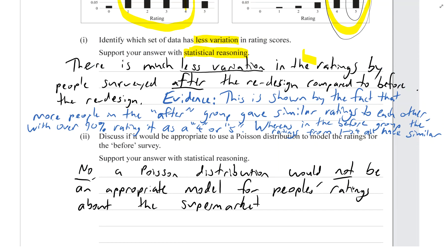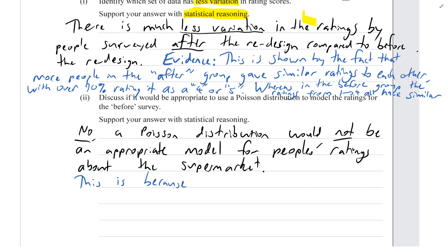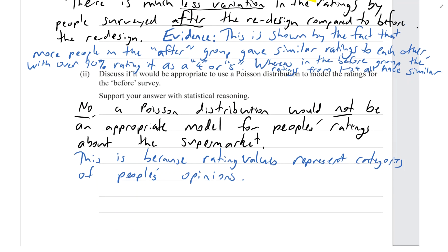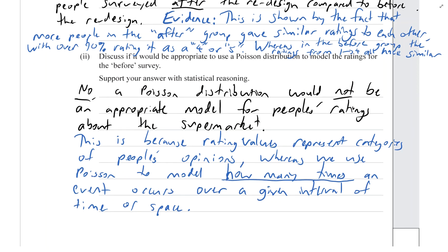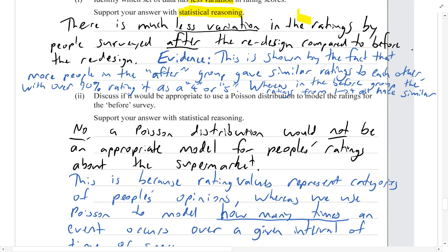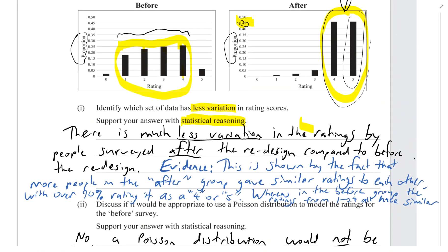And the reason is because rating values represent categories of people's opinions, whereas we use the Poisson distribution to model how many times an event occurs over an interval of time or space. So we've clearly answered that question - we've said no and we've said why. You couldn't have, you wouldn't talk about a rating of three meaning that something happened three times, so ratings are nothing to do with frequency, they're just to do with what people's opinions are.